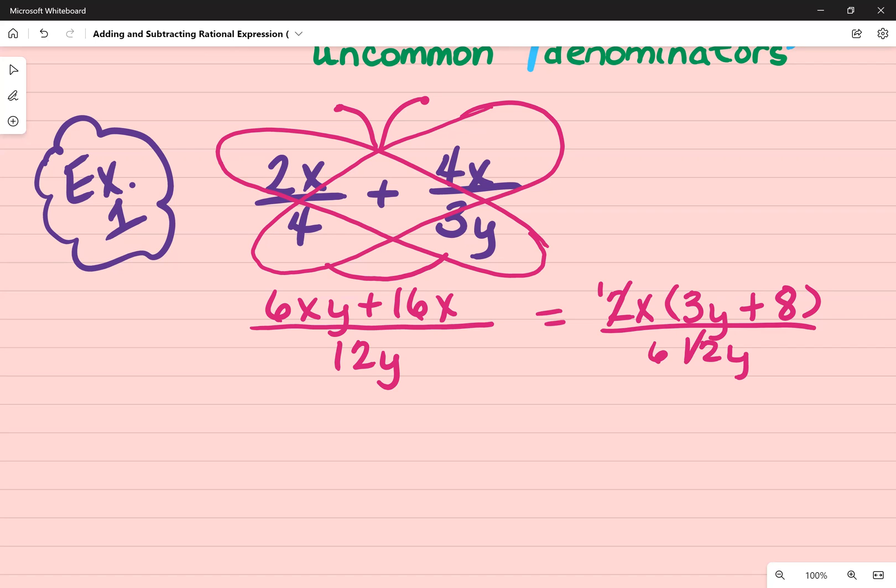What that would look like in factored form is x times the quantity of 3y plus 8, all divided by 6y.